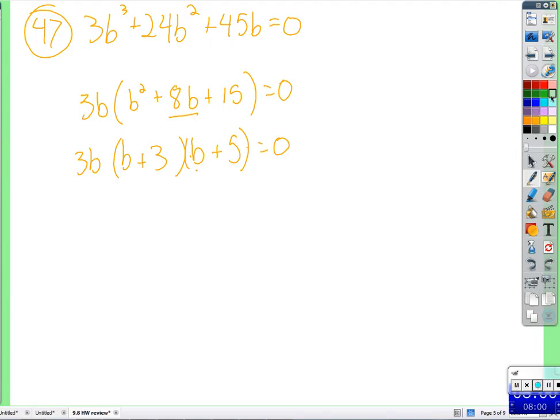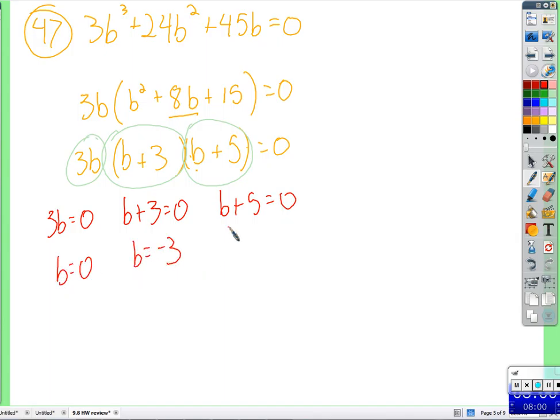All right, now we have something times something else times something else equals 0. If we're multiplying things together and we're getting 0, we know one of them is 0. So we set each factor equal to 0. Subtract 3 on both sides, subtract 5 on both sides.